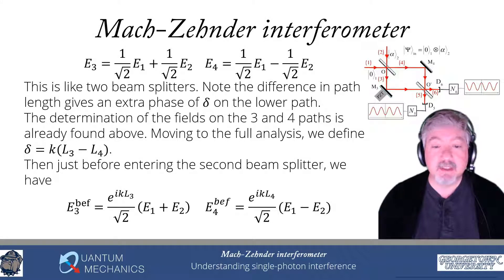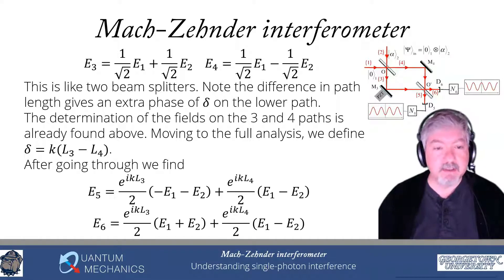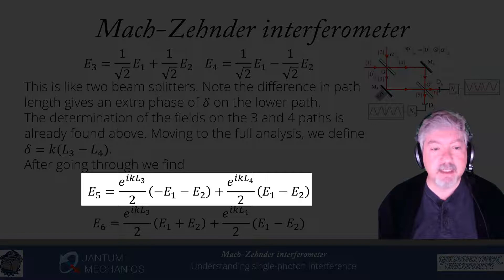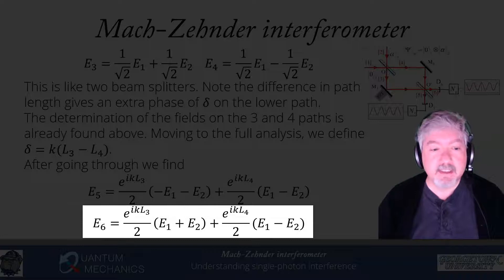Now we just have to take those E3s and E4s and multiply them by the Rs and the Ts and add them together, taking into account that there's a minus sign upon reflection from port 3 when it goes into port 5. So after going through, what we find is the following results: E5 is given by e to the i k L3 over 2, that's including a multiplication by 1 over square root of 2, minus E1 minus E2 plus e to the i k L4 over 2 E1 minus E2. That overall minus sign on the first term is coming from that minus R that I was describing. And then E6 is e to the k L3 over 2 E1 plus E2 plus e to the i k L4 over 2 E1 minus E2.